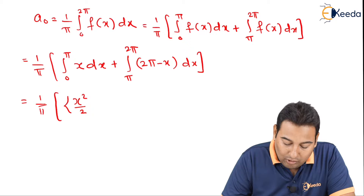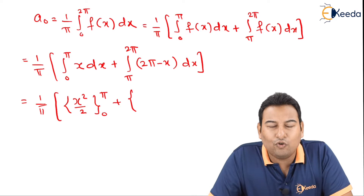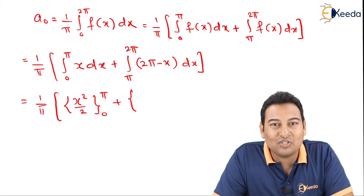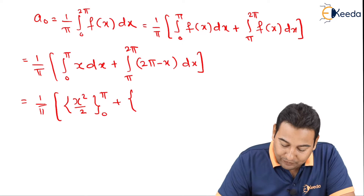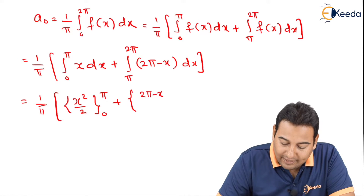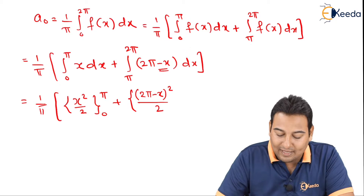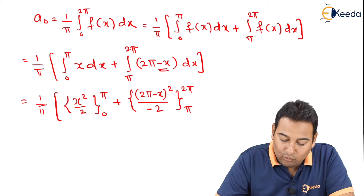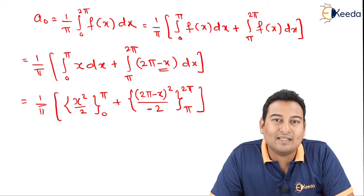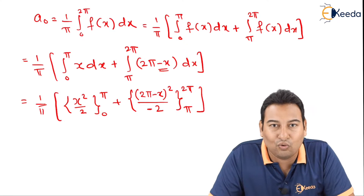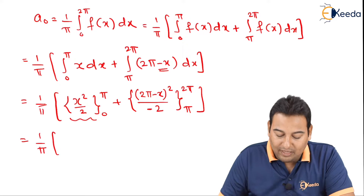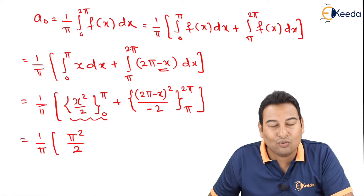Integrating x gives x²/2 from 0 to π. For the second part, integrating 2π - x: using the formula for (ax + b)^(n+1)/[(n+1)·a], this gives (2π - x)²/(-2) from π to 2π. Alternatively integrate as 2πx - x²/2. Substituting the limits: for the first part, upper limit π gives π²/2, lower limit 0 gives 0.